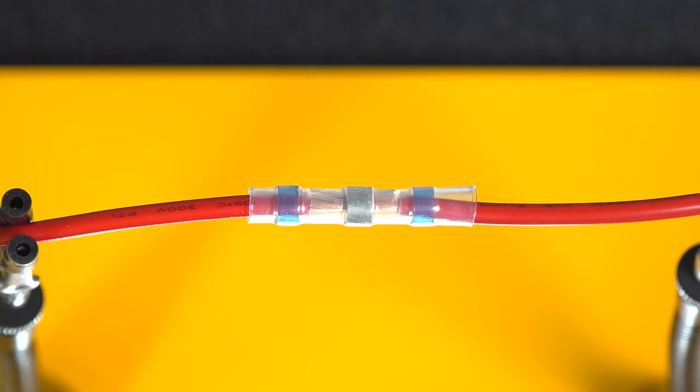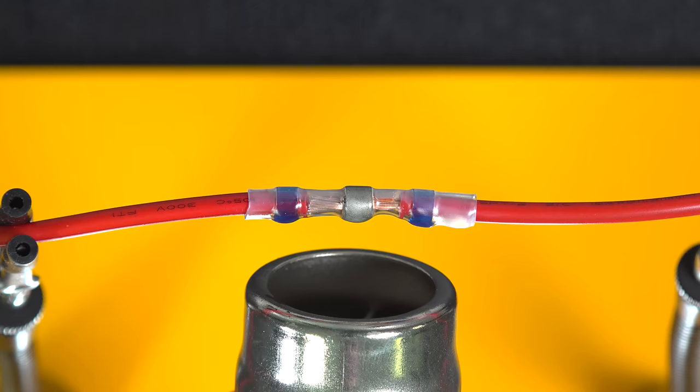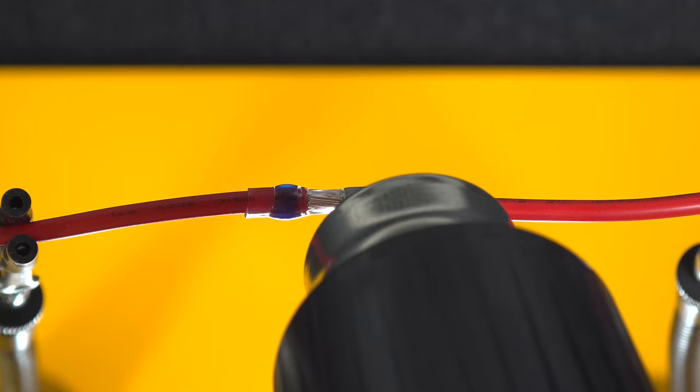Now grab your heat gun and turn it on. You want to apply heat all over this connector, and you'll quickly see how fast the connector will shrink down. But then you want to keep applying heat to the middle, and you'll see that ring of solder start to melt, and it will actually flow in and around the wires.